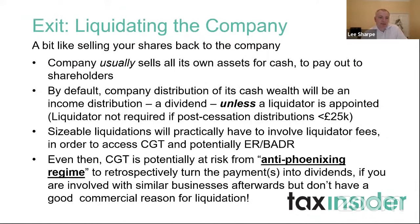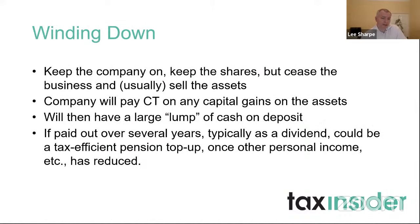Liquidating the company: the company usually sells all its assets for cash, then pays out to shareholders. By default, a company distribution of cash will be treated as a dividend — income — unless a liquidator is appointed. If the company is sizable, factor in the cost of a liquidator to get the more tax-efficient capital route. Even then, CGT is potentially at risk from the anti-phoenixing regime, which can retrospectively turn payments back into dividends if you're involved with a similar business afterwards without a good commercial reason for the liquidation. Generally if you're winding up for a valid non-tax reason, you'll be fine.